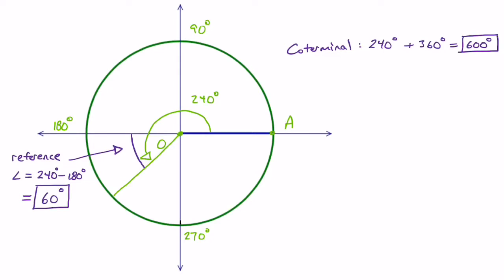And then to find another one, it's 600 plus 360 is 960. So there are the two coterminal angles, and now we just need a formula.